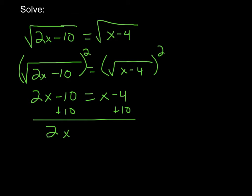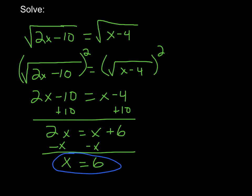That'll leave me 2x equals x plus 6. Now I need to get all the x's on the other side, so I'm going to subtract x from this side, subtract x from the other side. I'm left with just plain old x equals 6, and this is my answer.